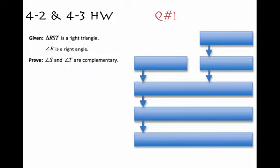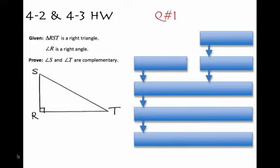So for number one, they give us that triangle RST is a right triangle and that angle R is the right angle. We have to prove that angle S and angle T are complementary, but we don't really know what that looks like. So my first hint is that you probably would want to draw your picture. You want to see what it looks like. That way you've got something to work with.